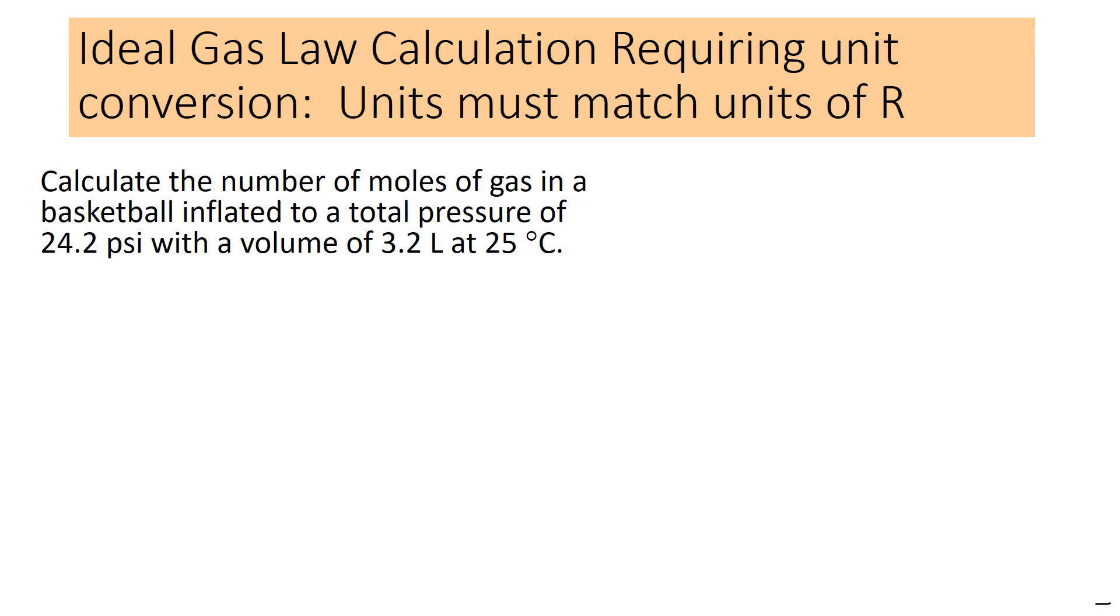Here's another ideal gas law calculation, and this one will require converting units. Calculate the number of moles of gas in a basketball inflated to a total pressure of 24.2 psi with a volume of 3.2 liters at 25 degrees C. So let's think about our given and find. The question asks for the number of moles. So that is n, that's what we're trying to find. We're given pressure equals 24.2 psi, volume equals 3.2 liters, and temperature equals 25 degrees C.